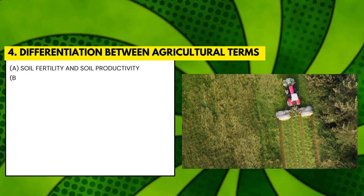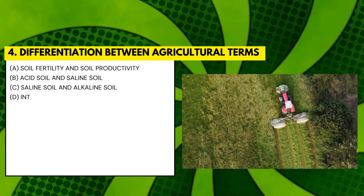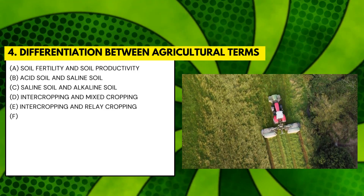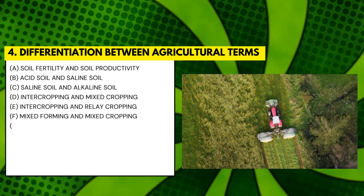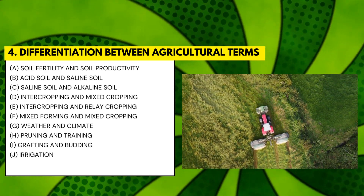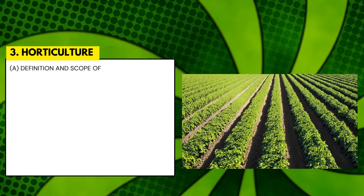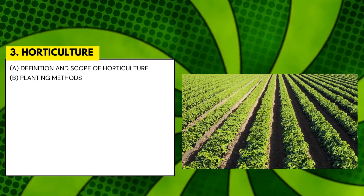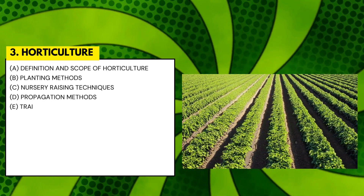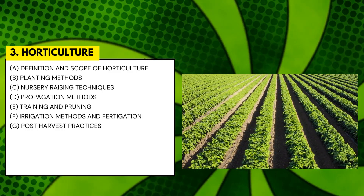Horticulture literally means garden culture or culture of garden crops. Learn about its various branches along with the planning and planting methods, controlled reproduction of plants and their propagation, difference between training and pruning, how to do effective irrigation, post-harvest practices of horticulture, and how to manage orchards and their establishment.